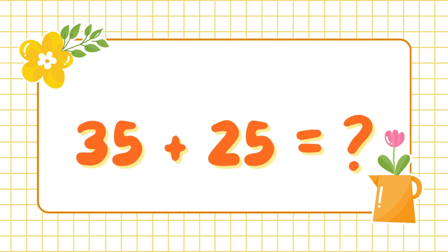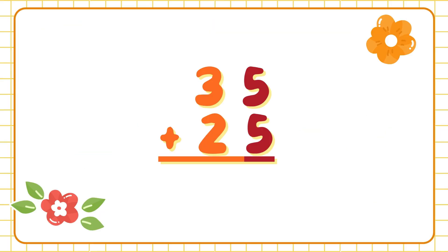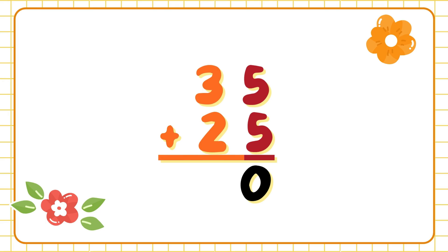What about 35 plus 25? Remember, the dark areas are the ones and the orange one is the tens. What is five plus five? That makes ten, right?